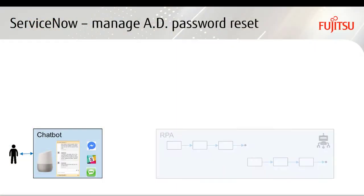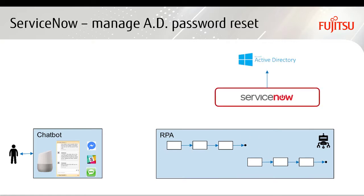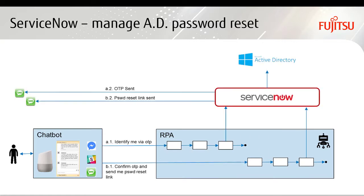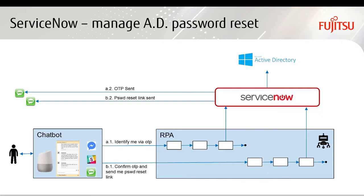So you navigate the web page, you're given your username, you receive a verification code by SMS, and after that you're verified, you receive a password reset link and instructions also by SMS and email. However, I'm not going to navigate the website. We have a chatbot solution integrated with an RPA solution — robotic process automation — that is going to navigate ServiceNow for me.